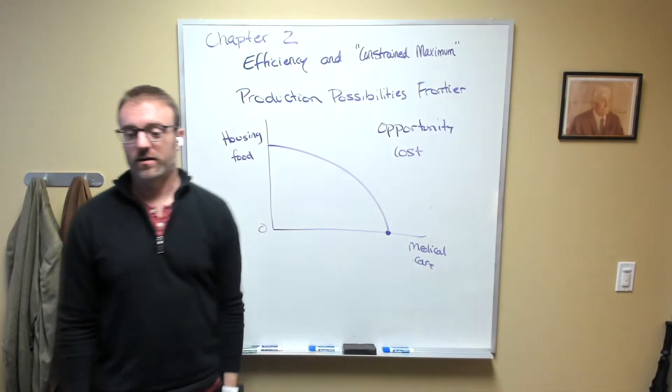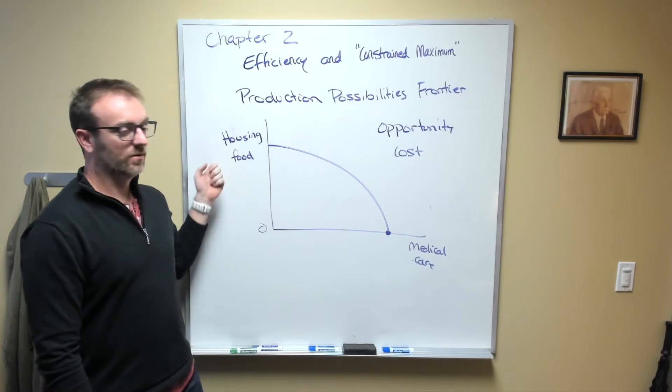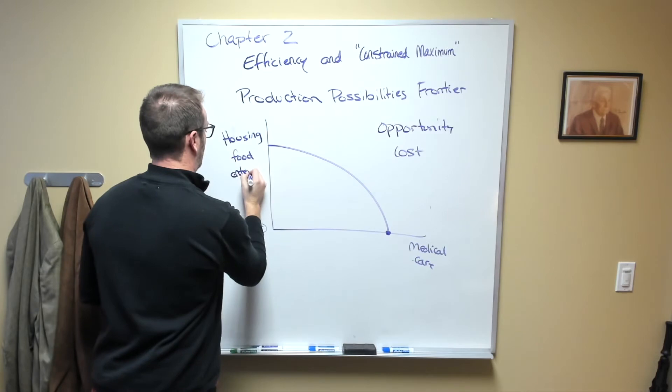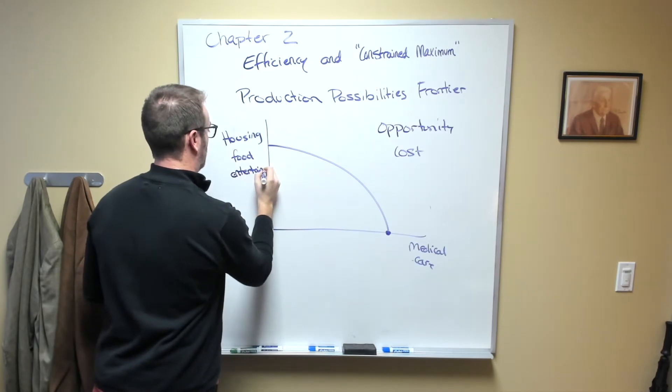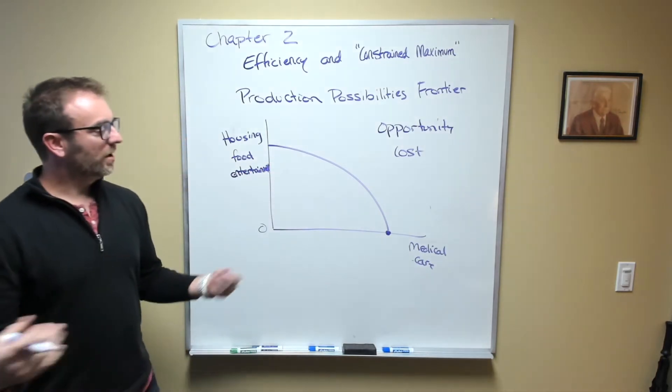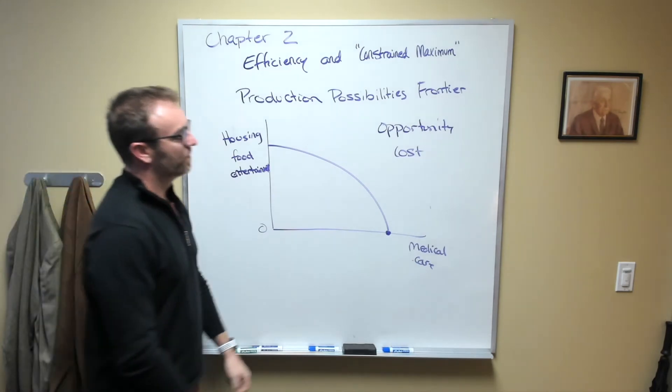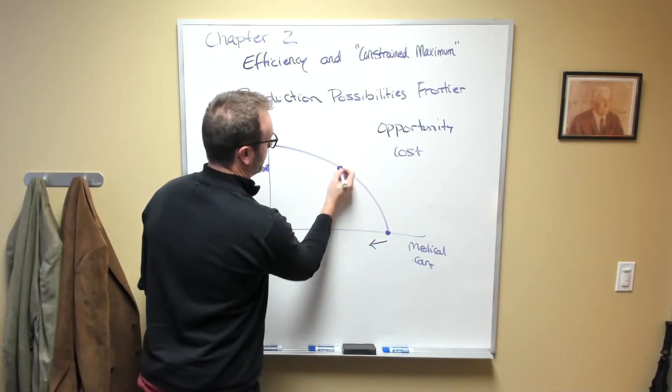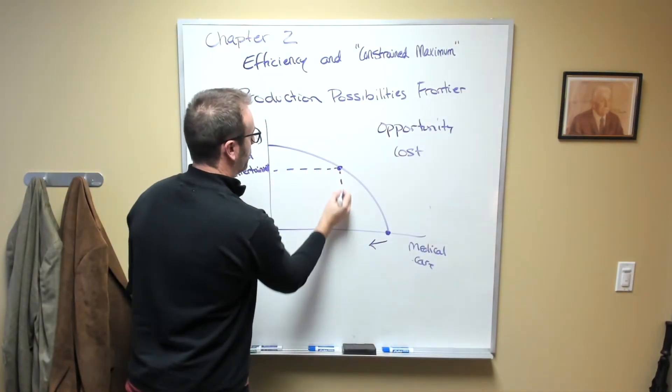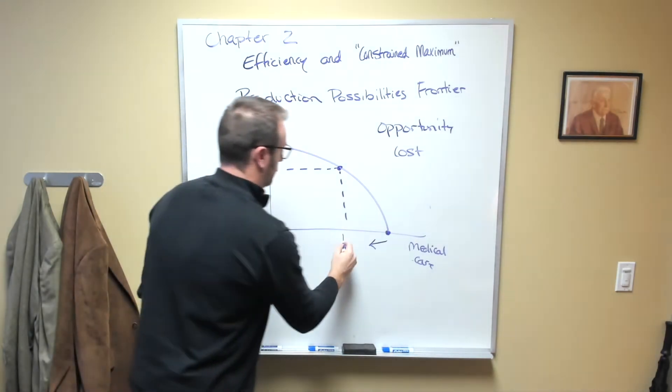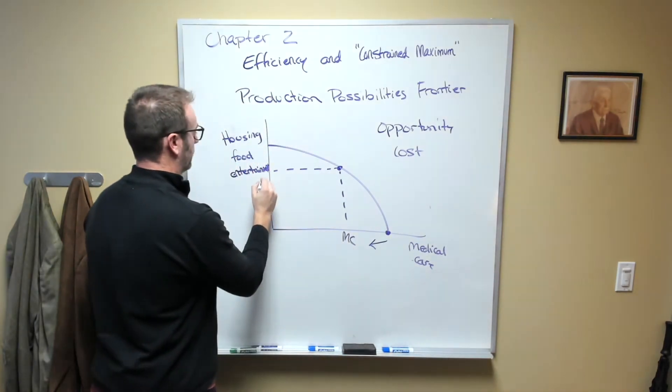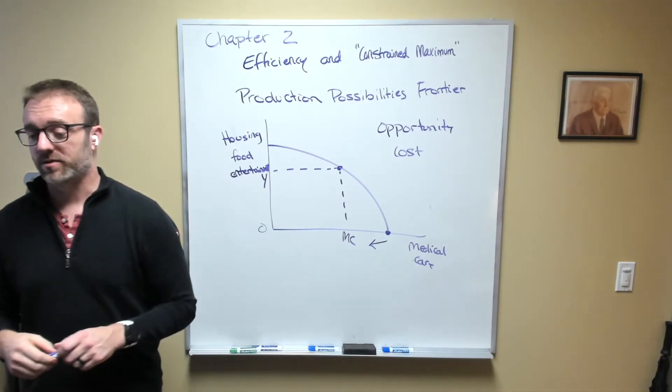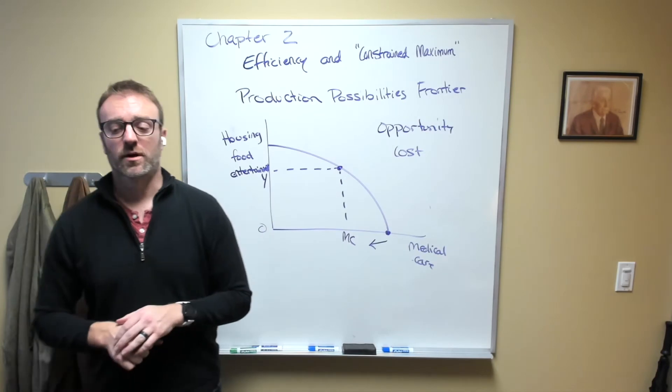Instead of wanting just medical care, we probably also want to have housing, food, and perhaps even some entertainment. But to get more of these things means we have to give up some medical care. So if we wanted to get up to here, we would have less medical care but more of all these other things.